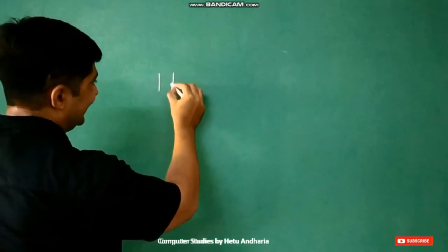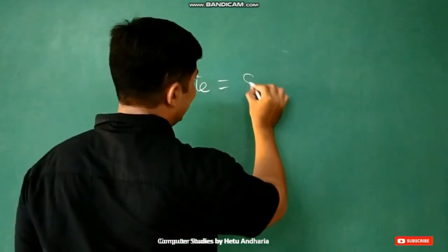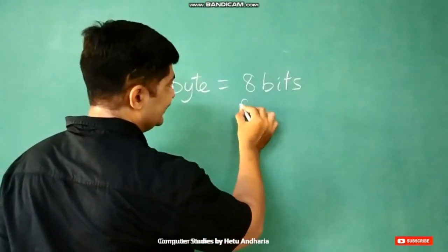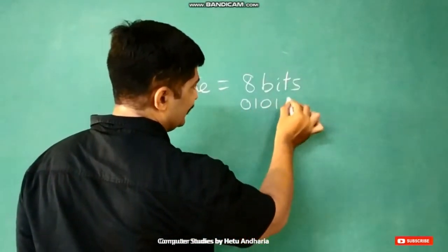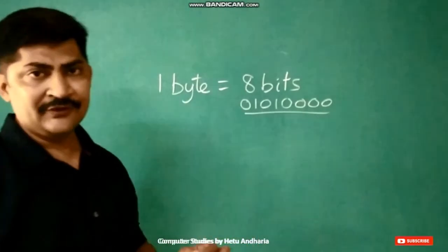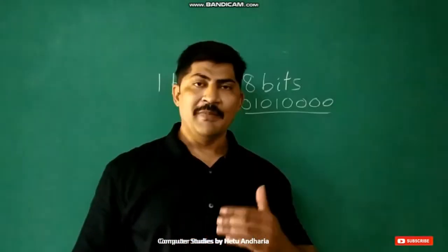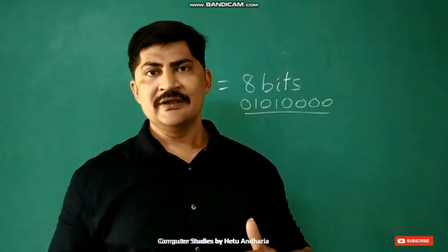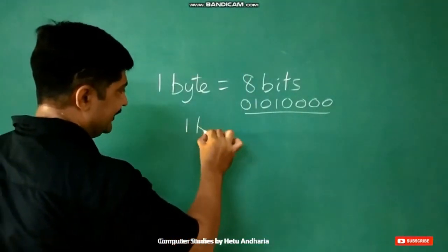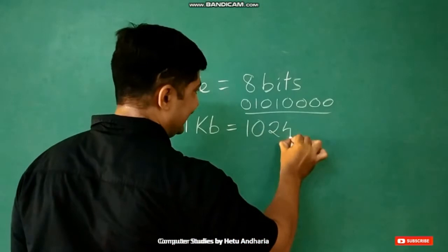1 byte is equal to 8 bits. These bits could be either 0 or 1. The combination of these 8 digits forms 1 byte. After byte, the next unit which comes is kilobyte. 1 KB is equal to 1024 bytes.